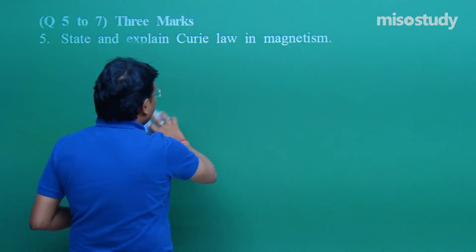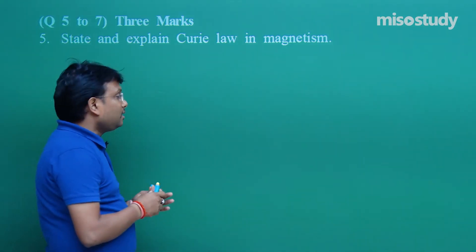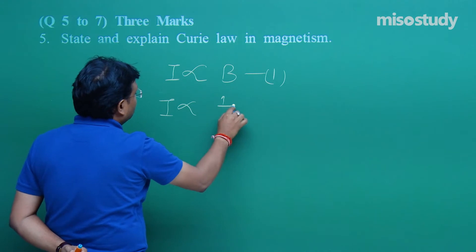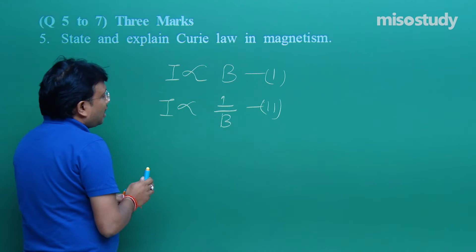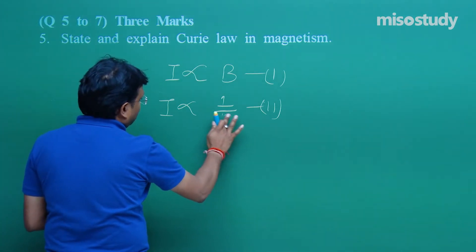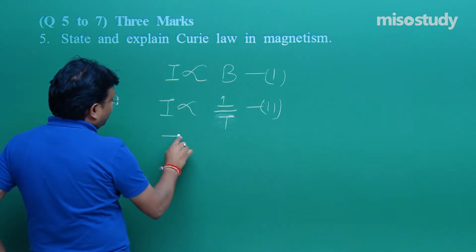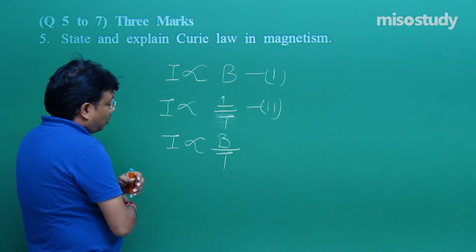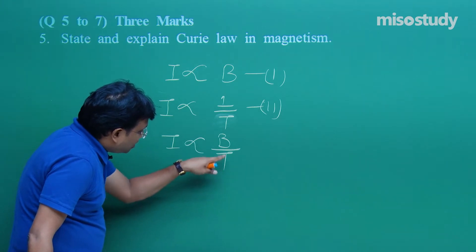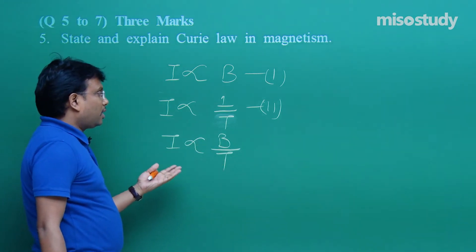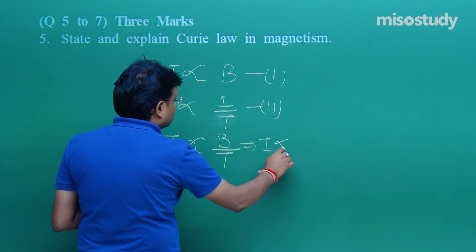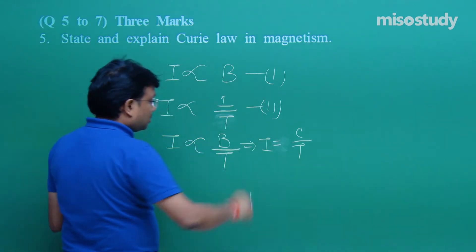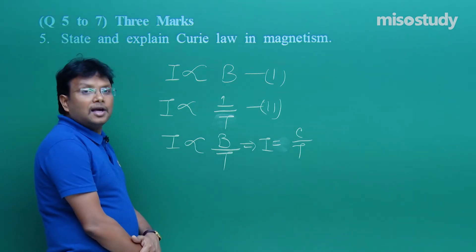Combining both proportionalities, you get: I is directly proportional to B upon T. You may introduce a constant if needed. From this relation you can also find the dimensional formula of I and calculate related values. This relation is what is defined as Curie Law. It was question number 5, for 3 marks, so you have to provide a detailed answer.